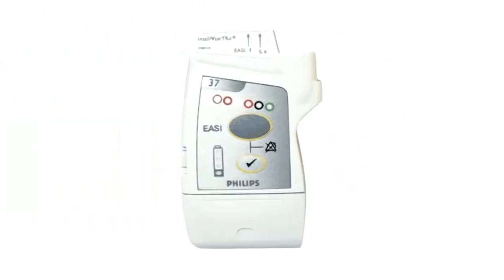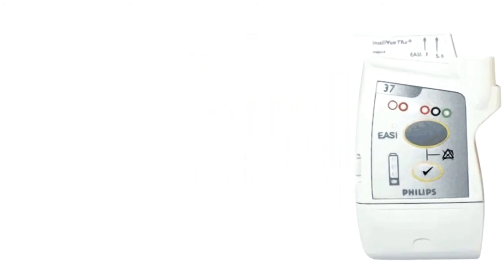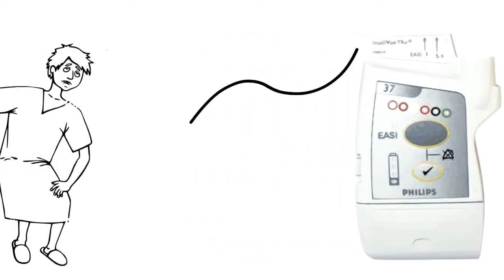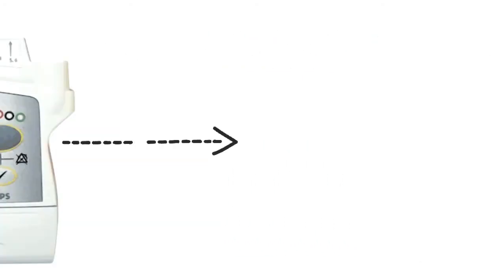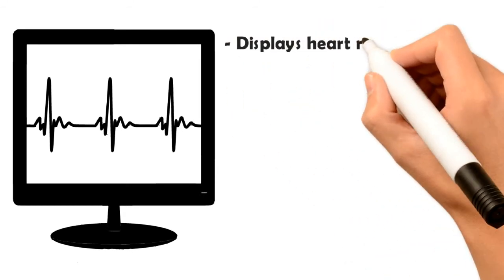It also uses a small battery-operated transmitter connected to the ambulatory patient to send electrical signals to another location, where they are displayed on a monitor screen. The monitor screen can display the patient's heart rate and rhythm,